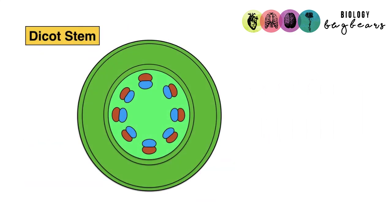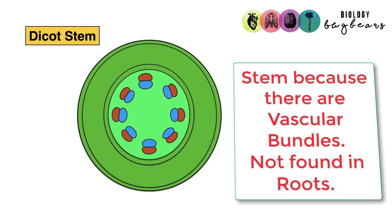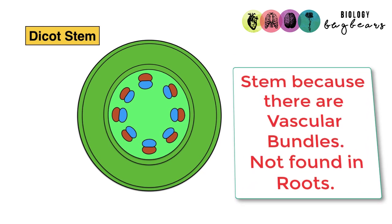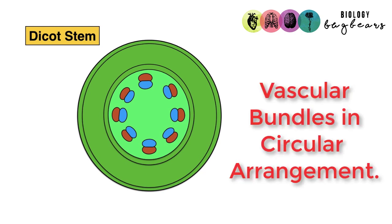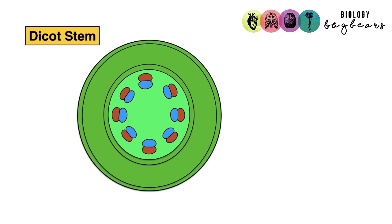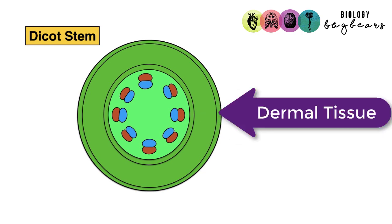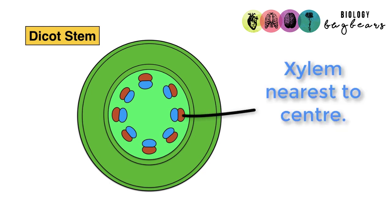This is a dicot stem, a diagram frequently encountered. You would know this is a stem and not a root because you see vascular bundles — the xylem and phloem are arranged into structures known as vascular bundles, whereas in a root there would be no vascular bundles. You know it's a dicot stem and not a monocot stem because the vascular bundles are arranged in a circular pattern. On this diagram, make sure you can mark in where ground tissue, dermal tissue, xylem, and phloem are.